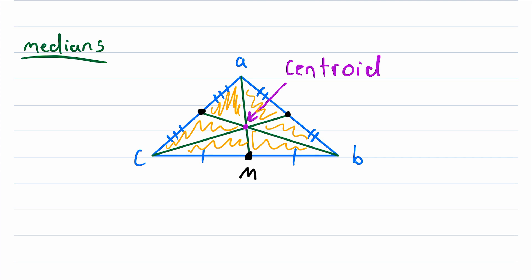So one last time, a median of a triangle is a line segment going from a vertex of the triangle to the midpoint of the opposite side. And to give a more rigorous description of opposite side,